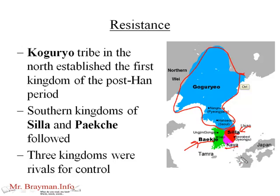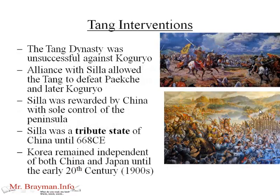The kingdom of Kaya was very small and absorbed very quickly. We usually talk about the three kingdoms period as Kogoruyo, Silla, and Pakche, and they were rivals for control of the entire peninsula. If you recall our studies of the Tang, they were a very expansionist dynasty and tried repeatedly to conquer and recapture Korea. But it was largely the Kogoruyo who held very strong against the Tang, especially in the early 600s. The Tang couldn't quite seem to do it until they formed an alliance with Silla, and then Silla and the Tang defeated the Pakche and later the Kogoruyo.